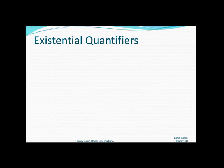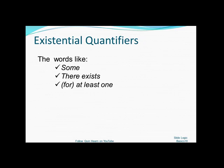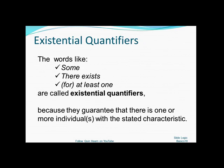We also saw existential quantifiers, such as some, there exists, or for at least one. So these are saying that they're guaranteeing the existence of something with that particular characteristic.